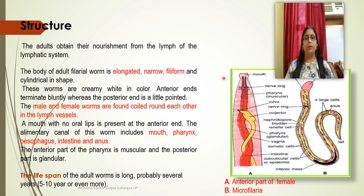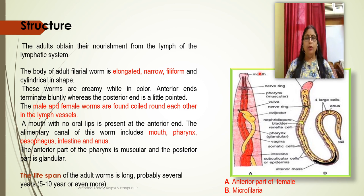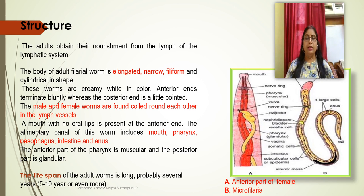The posterior end is slightly pointed. Both male and female worms are found coiled and present in the lymphatic vessels. The mouth has no oral lips; it is present on the anterior side. The alimentary canal has several parts: mouth, pharynx, esophagus, and anus. The anterior part of the pharynx is muscular and the posterior part is glandular.